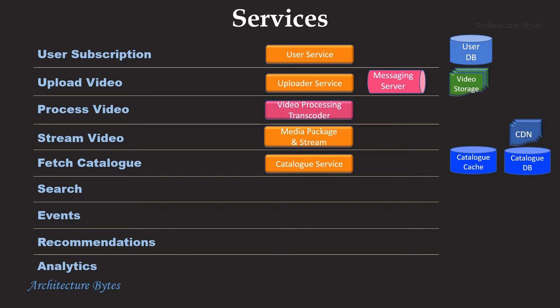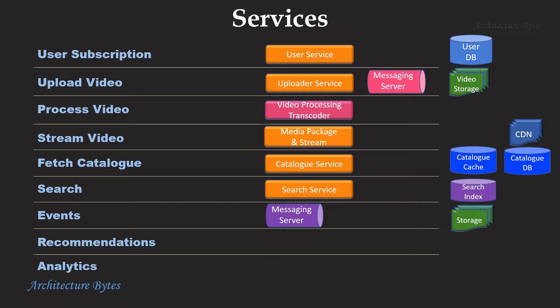A cache to store the catalog for quick access. A search service to query index data. A messaging service to capture all client-related events like video impressions, clicks, searches, and so on — this data is sent to storage for further processing. A recommendation service to analyze large amounts of historical data to recommend suitable content for viewers. An analytics service to process big data for a variety of reports and business intelligence.